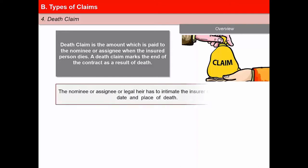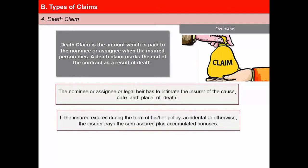The nominee, assignee, or legal heir has to intimate the insurer of the cause, date, and place of death. If the insured expires during the term of his or her policy, accidental or otherwise, the insurer pays the sum assured plus accumulated bonuses if participating, less dues like outstanding policy loan and premiums plus interest thereon respectively.